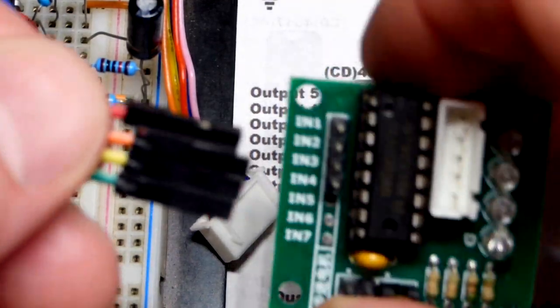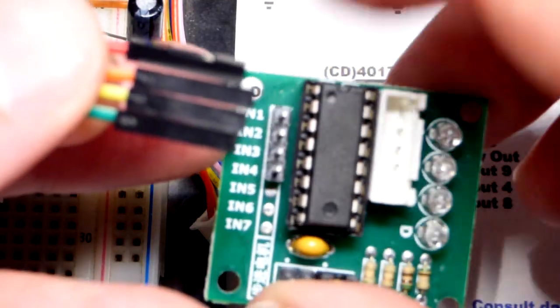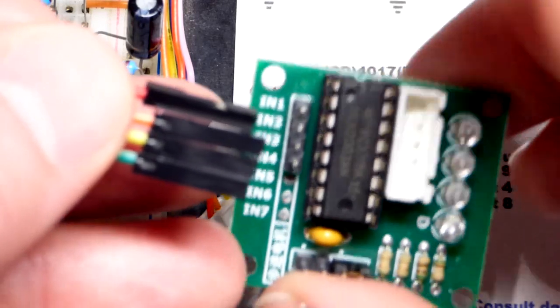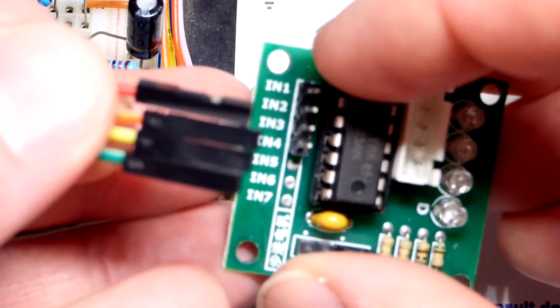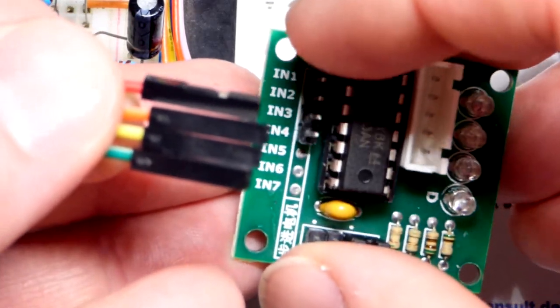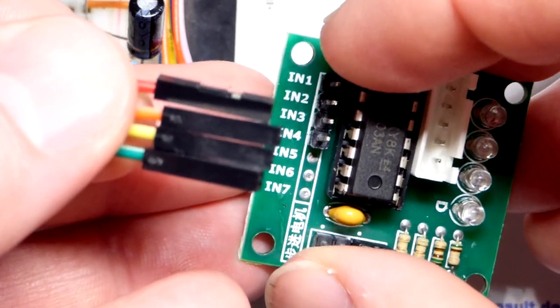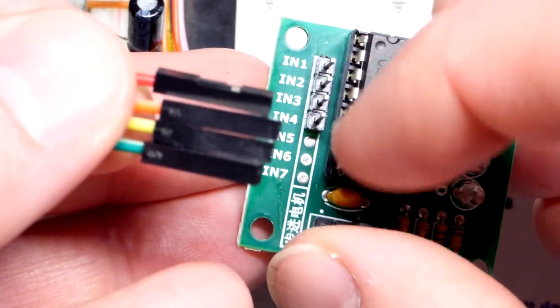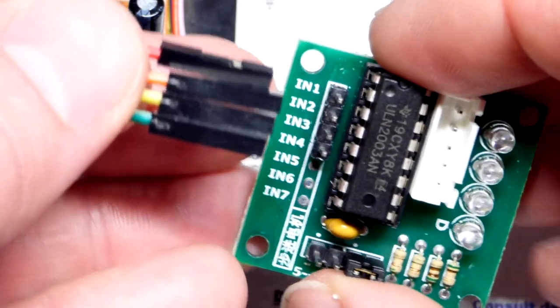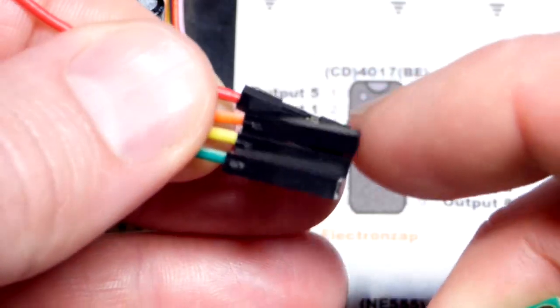So now we need to give those outputs as signals to this stepper motor module here. If you give a high output to, or input I should say now, to the top pin and then work your way down, that slowly turns the stepper motor clockwise, which is what we want here.